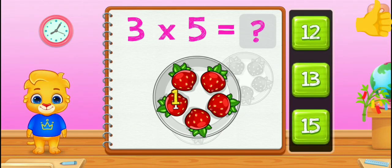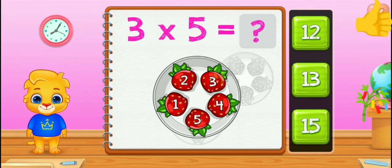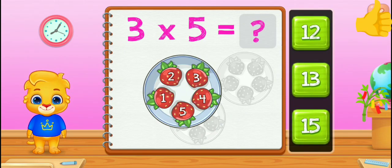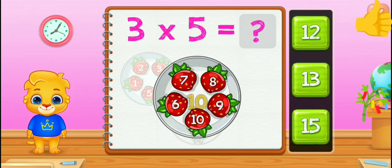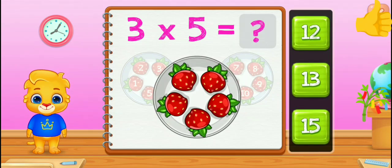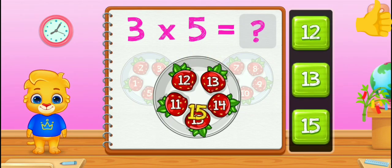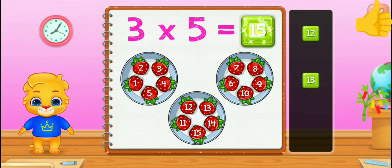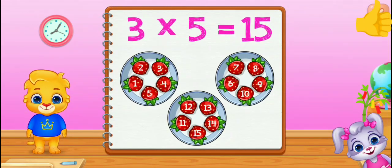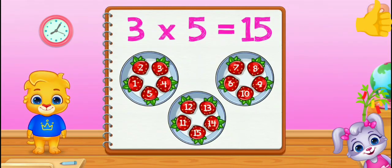One, two, three, four, five, six, seven, eight, nine, ten, eleven, twelve, thirteen, fourteen, fifteen. Three times five equals fifteen.